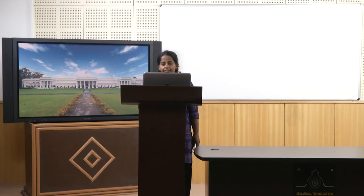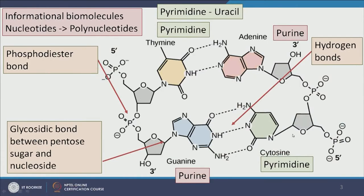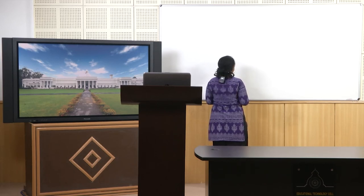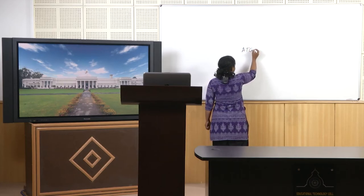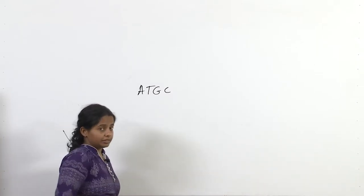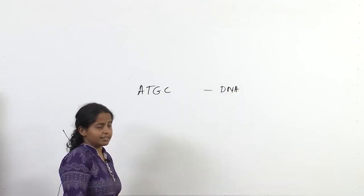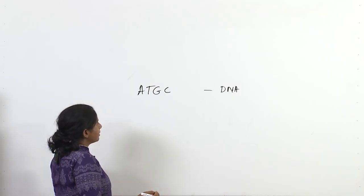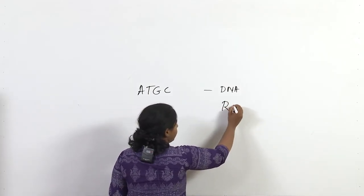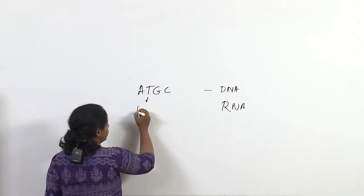In this slide, we have four informational molecules attached to a phosphate backbone: cytosine, guanine, thymine, and adenine. Adenine, thymine, guanine, and cytosine — often abbreviated as ATGC — form the basic alphabet of life. These are found in DNA because they are deoxyribonucleic acids. When we have RNA, the T is replaced by U, so we have AUGC. So if I give you two sequences and ask you to determine which is DNA and which is RNA, you need to look for T or U — if it has U it is RNA, if it has T it is DNA.